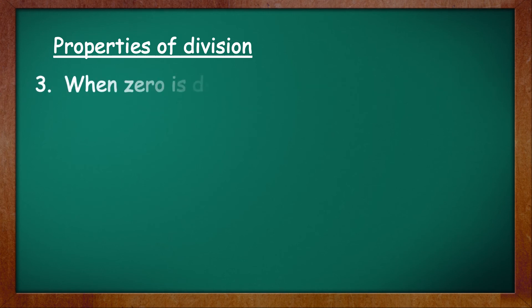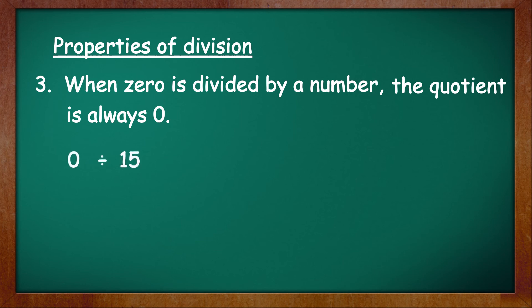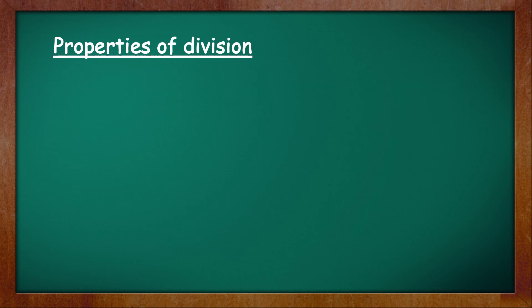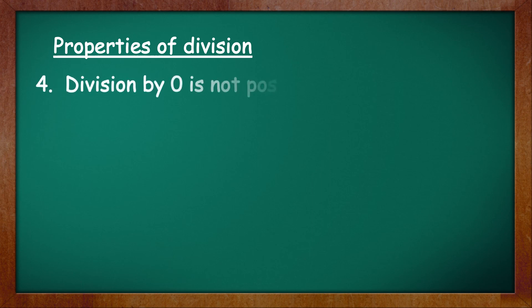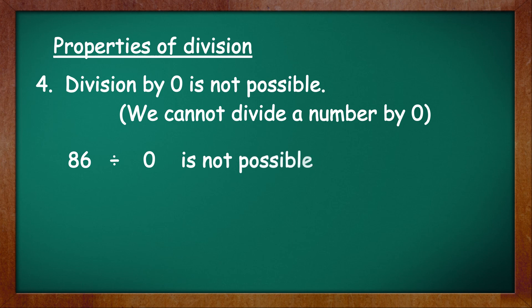Property number three: when 0 is divided by a number, the quotient is always 0. Because 0 by itself doesn't have any value — it means nothing, and how can you divide when there is nothing to share? That is why 0 divided by any number will be 0. For example, 0 divided by 15 is equal to 0. Property number four: division by 0 is not possible, which means we cannot divide a number by 0. For example, 86 divided by 0 is not possible, or 212 divided by 0 is not possible.